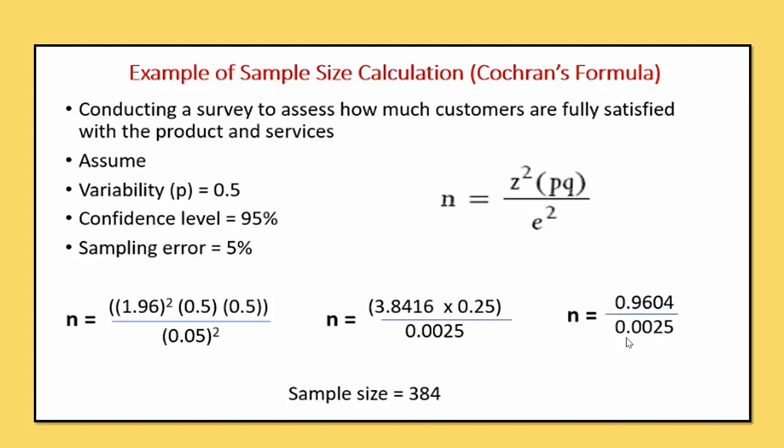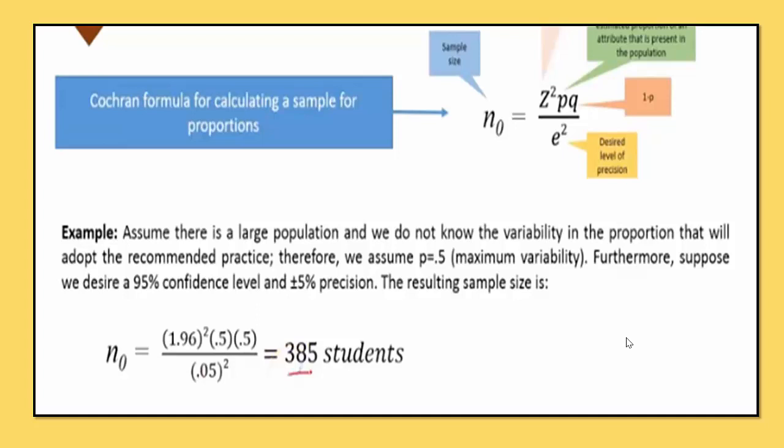Now look at the second example. In this example, variability is not given. Therefore we consider maximum variability: P = 0.5, and Q = 1 − 0.5 = 0.5. Confidence level is again 95%, so Z = 1.96. Putting all values into the formula gives n = 385. This answer is based on an unknown population — when you don't know the population or your population is very large and infinite.